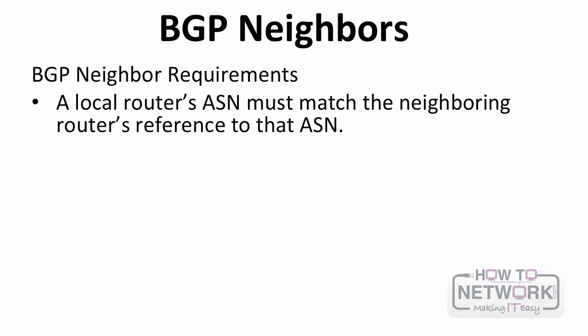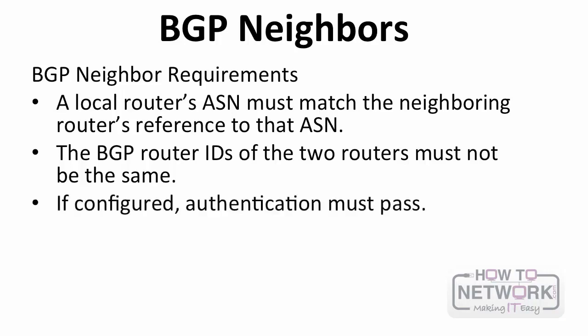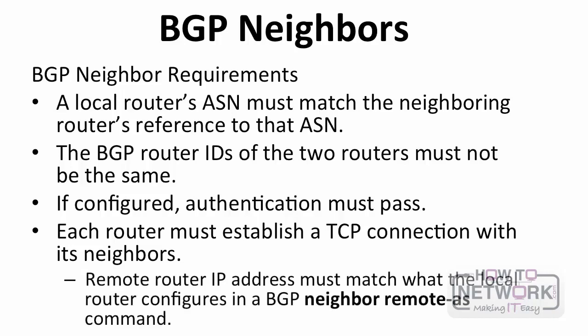For BGP neighbors, your AS must match what your neighbor expects as they point to you. The BGP router IDs of the two routers must not be the same. Configuration must be correct, and each router must establish a TCP connection with its neighbors. Note: the remote router IP address must match what the local router configures in the BGP neighbor remote-as command.